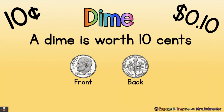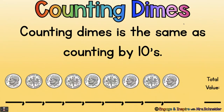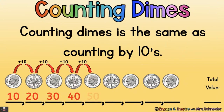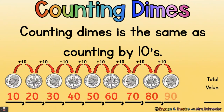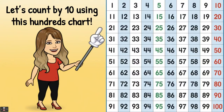Counting dimes is the same as counting by tens. Here we have nine dimes. Let's count by tens to find the total value: ten, twenty, thirty, forty, fifty, sixty, seventy, eighty, ninety. So the total value of nine dimes is ninety cents. Let's count by tens using this hundreds chart: ten, twenty, thirty, forty, fifty, sixty, seventy, eighty, ninety, one hundred.